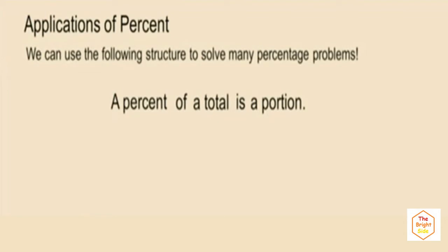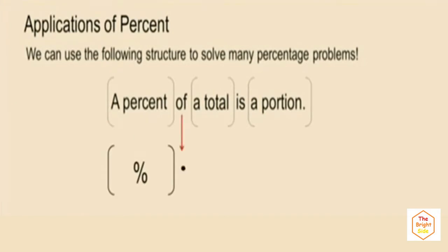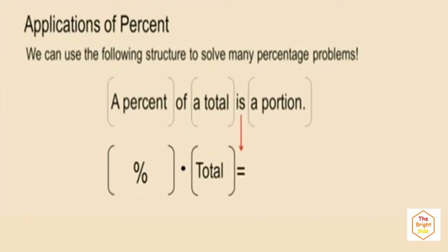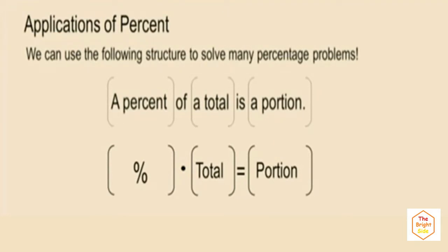Now let's translate this word statement into a math statement. 'A percent of' translates into multiplication. 'Total' is the total, 'is' is our equals sign, and 'portion' is the portion. In all these problems, you have to find out which one you're looking for: the percent, the total, or the portion.